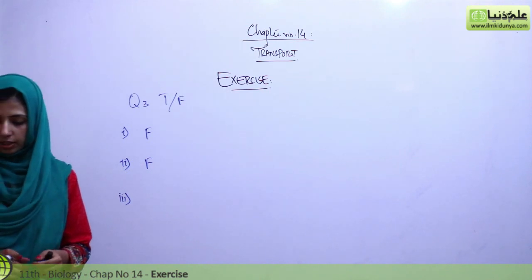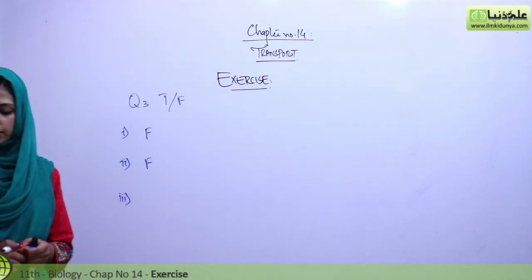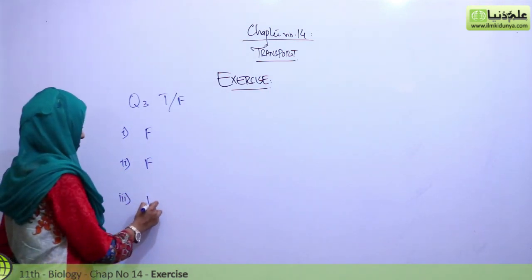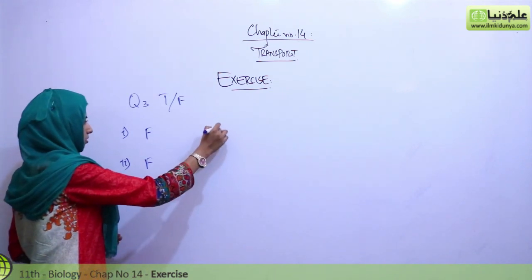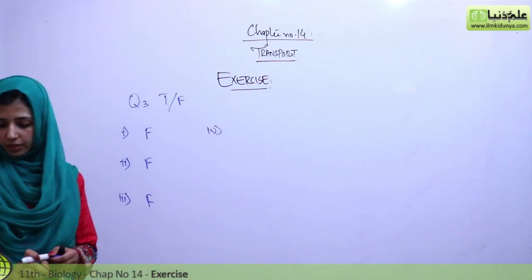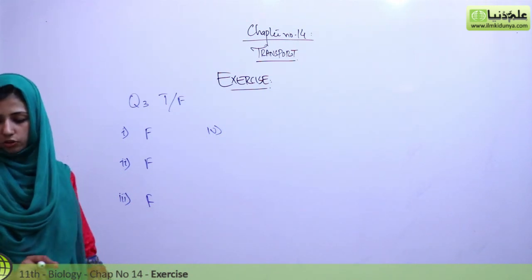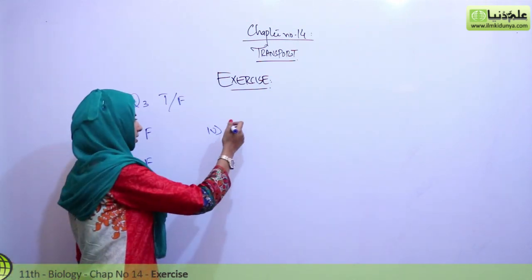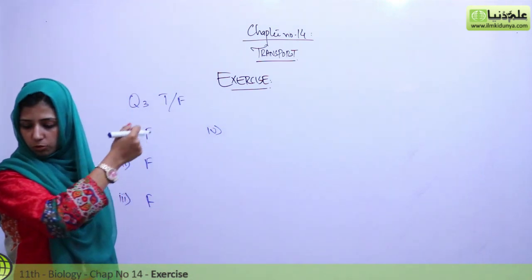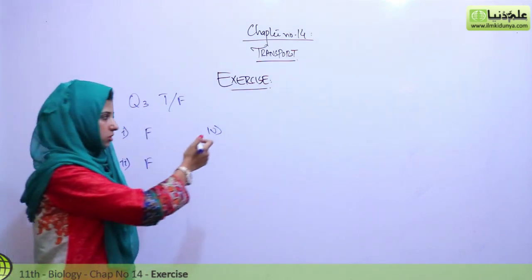Third is, the pacemaker of the heart of man is AV node. It is SA node, so this is also false. Fourth is, each sieve tube member is associated with one or more tracheary cells. Tracheary cells are in xylem, sieve tubes are in phloem, so this is also false.